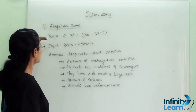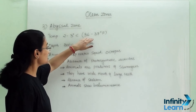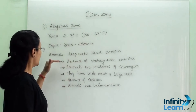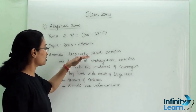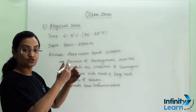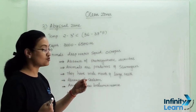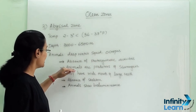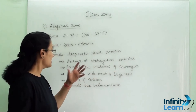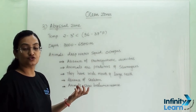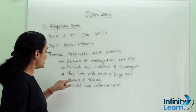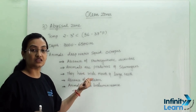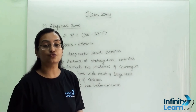Then comes the abyssal zone. This zone's temperature is 2 to 3 degrees Celsius, that is 36 to 37 degrees Fahrenheit, and the depth is 3000 to 6500 meters. Animals in this zone include deep-water squid and octopus. As this is one of the deepest zones, there is a complete absence of photosynthetic activity and sunlight. Animals are mainly predators and scavengers. They have very wide mouths and large teeth to catch their prey. There is an absence of skeleton in the bodies of animals, and animals show bioluminescence due to total absence of light.